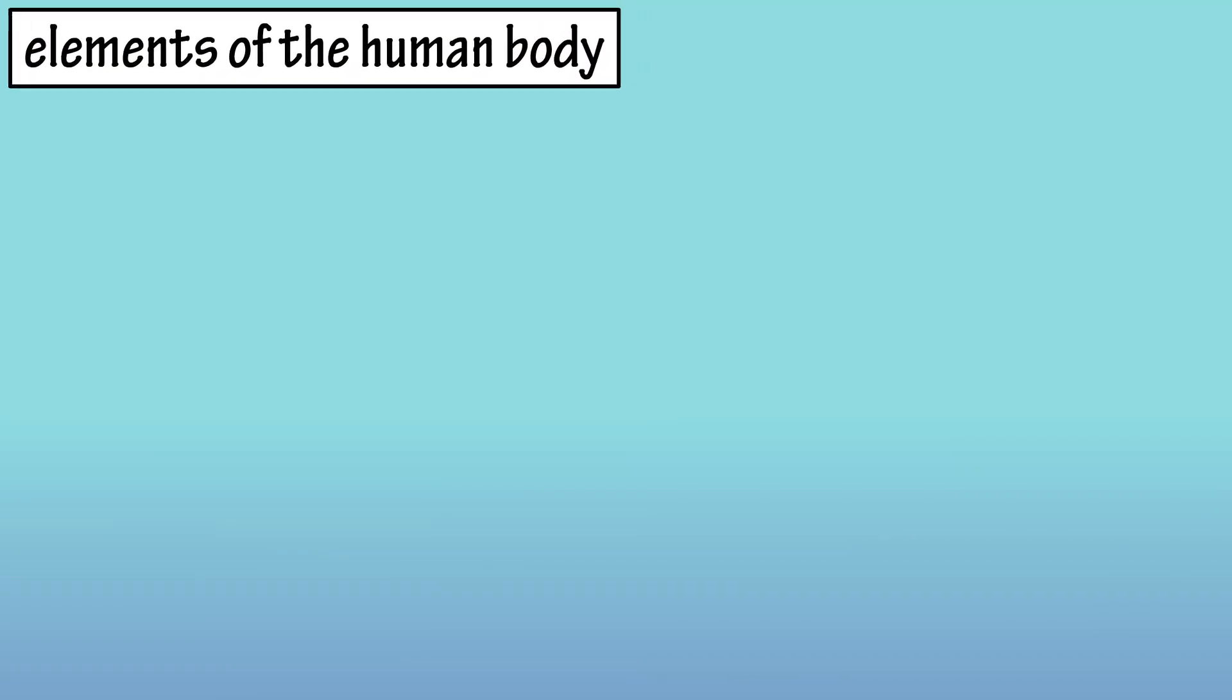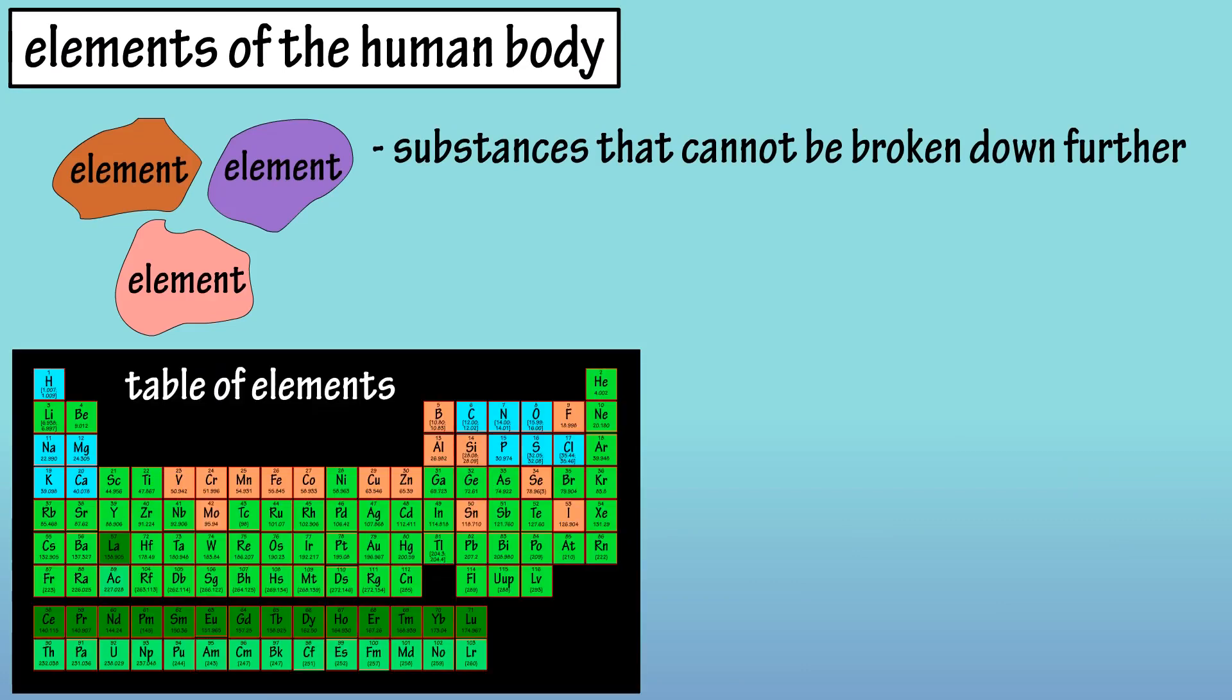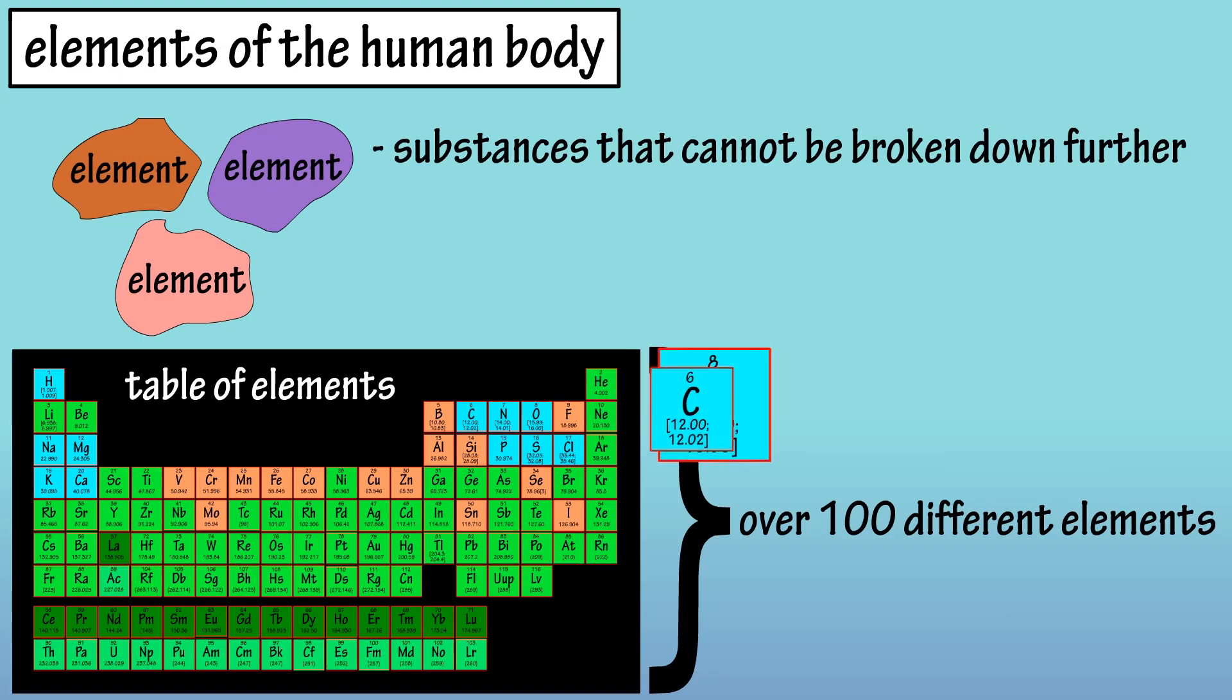Elements of the human body. Elements are substances that cannot be chemically broken down into simpler substances. There are over a hundred different elements, including oxygen and carbon.